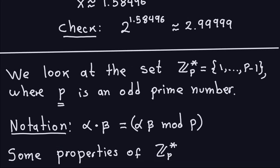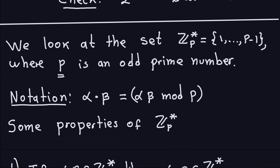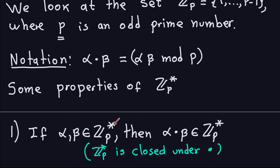Let me mention some properties of Z_p* under multiplication modulo p. Property one: if I take two elements alpha and beta in Z_p* — any numbers from one to p minus one — then when I multiply them modulo p I still get a number from one to p minus one. I don't get zero, because p is prime and neither factor is zero. We call this property closure: whatever you do in Z_p* stays in Z_p*.